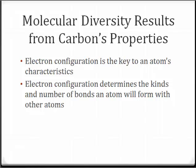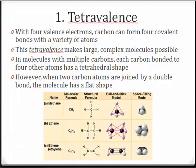The molecular diversity in biological molecules is a result of carbon's amazing properties. Primarily, its electron configuration is the key to an atom's characteristics, which determines the kinds and numbers of bonds an atom will form with others. The first important property of carbon is tetravalence. Carbon has four valence electrons; therefore, it can form four covalent bonds with a variety of atoms, which is what makes large, complex molecules possible.